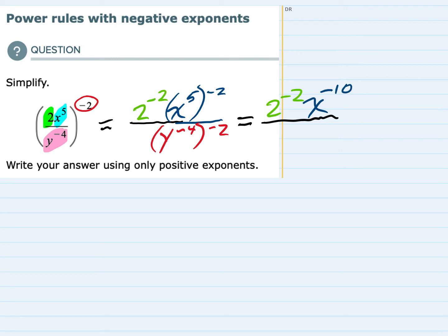And then in the denominator I also have a variable raised to a power raised to a power. And I again keep the variable and multiply those exponents. But here I have a negative times a negative. So the negative 4 times the negative 2 equals a positive 8.